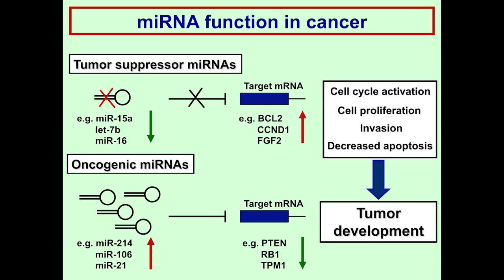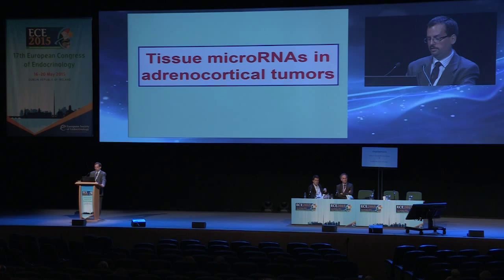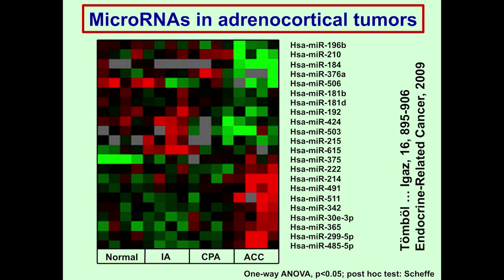These target messenger RNAs involved in cell cycle activation, proliferation, invasion, or apoptosis — all important in tumor development. I would like to briefly deal with the relevance of tissue microRNAs in adrenocortical tumors, which can be helpful in histological diagnosis or determining malignancy or prognosis, but mostly not in a preoperative fashion, as adrenal biopsy is very rarely performed. In our first study, one of the first in tissue microRNA expression, we found 22 microRNAs significantly differentially expressed between malignant and benign adrenal tumors, and by real-time PCR we validated six of these.